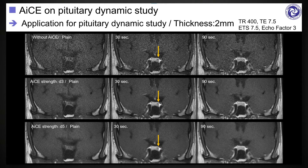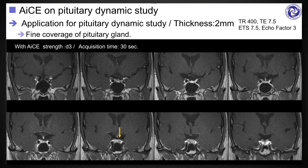The dynamic contrast enhancement method is necessary for visualizing and diagnosing pituitary microadenoma. However, there is a trade-off between temporal resolution and spatial resolution. When trying very thin slice thickness and short acquisition time interval, the image would be very noisy. By applying adequate AICE noise reduction, the pituitary microadenoma can be visualized clearly. We can get six slices covering the whole pituitary gland, and very small pituitary adenoma can be easily recognized by applying AICE.